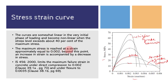The maximum stress is reached at a strain approximately equal to 0.002. Beyond this point, an increase in strain is accompanied by a decrease in stress. For design purposes, IS 456:2000 limits the maximum failure strain depending upon the nature of loading. For members under flexure, the maximum failure strain is 0.0035 (Clause 38.1b, page 69), whereas in Clause 39.1a, page 70, the failure strain is limited to 0.002 for compression members.